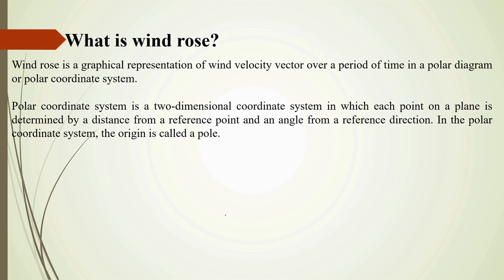A polar coordinate system is a two-dimensional coordinate system in which each point on a plane is determined by a distance from a reference point and an angle from a reference direction. In the polar coordinate system, the origin is called the pole.